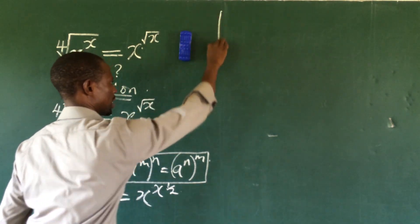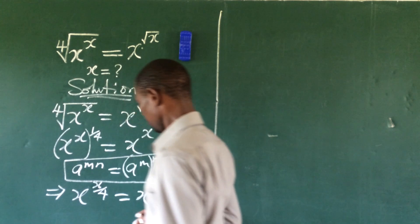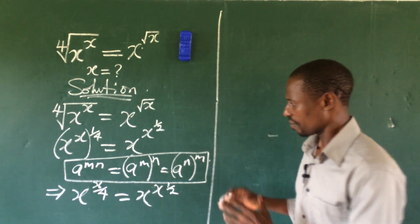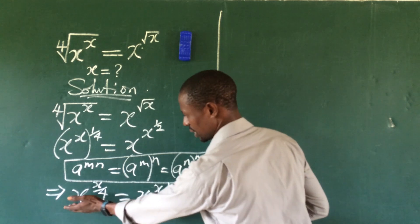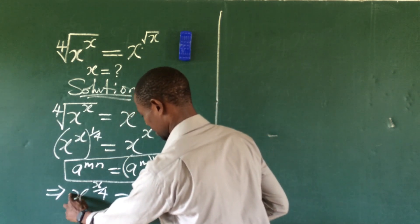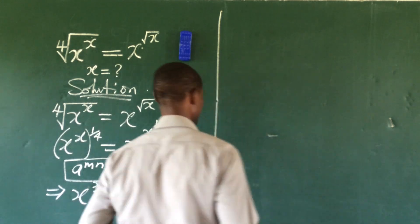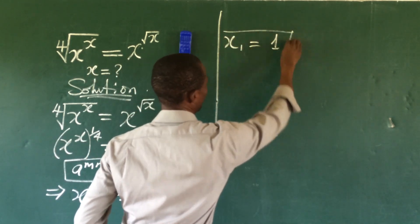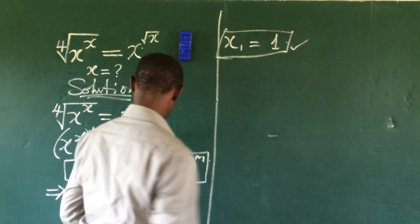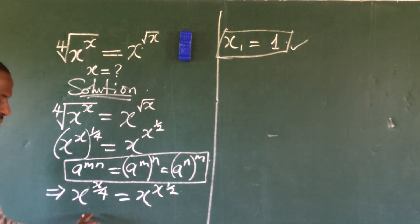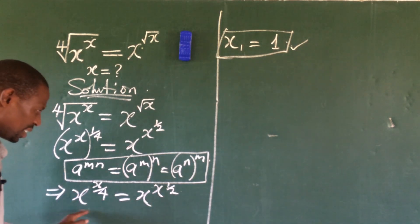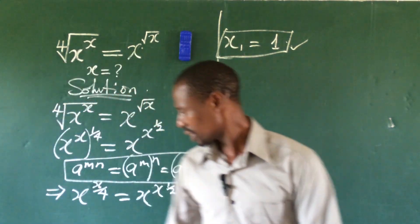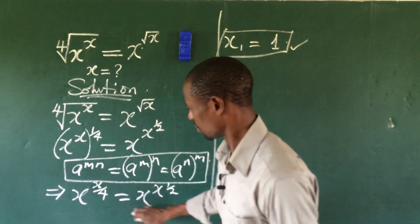Let's continue on this side of the board. If you look at this, the bases are the same. Since the bases are the same, we can equate the exponents. First of all, we can get the value of x from the base coefficients. The base coefficients here are the same — they are both 1, 1. So automatically, we have x is equal to 1. So x₁ is equal to 1. That is the first root to this exponential equation.